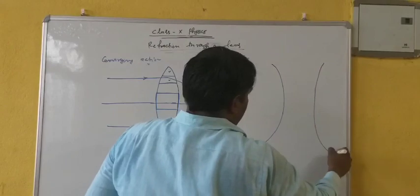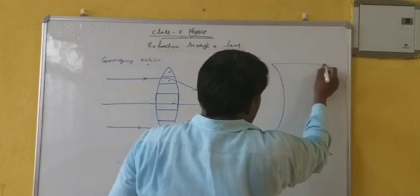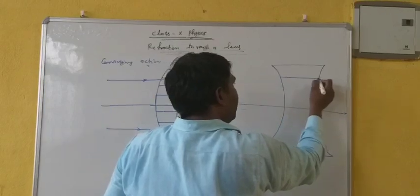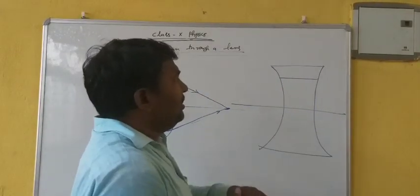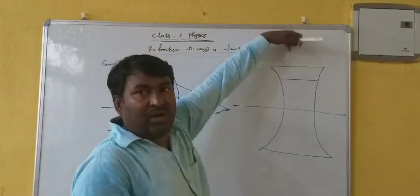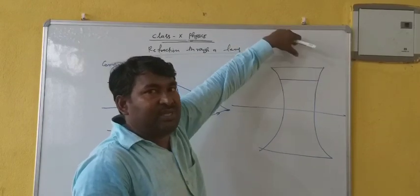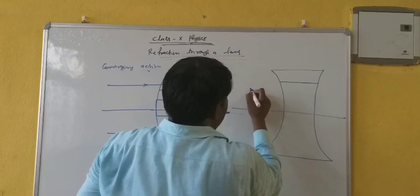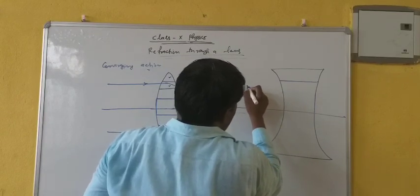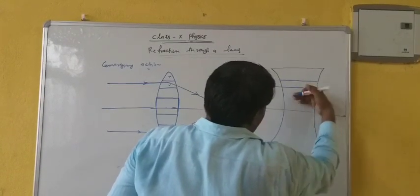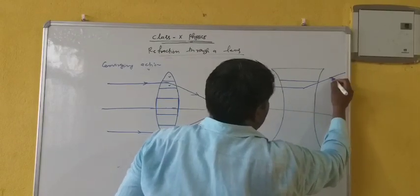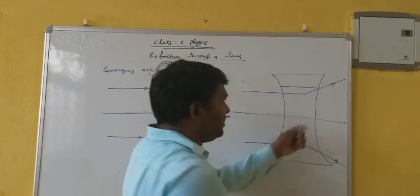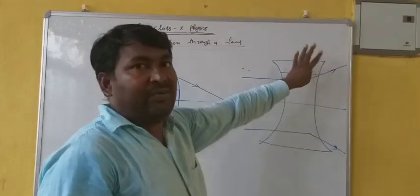Here also a concave lens — here also it is looking like a prism, but its base is in the outward direction, outside. That is why when the light ray comes, it will bend towards the outward direction. Hence it is called diverging.